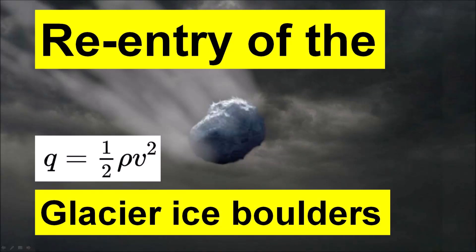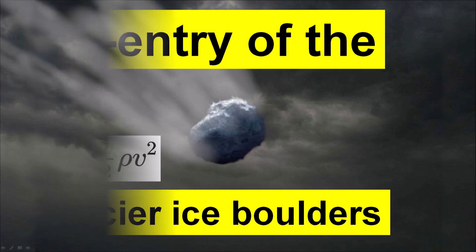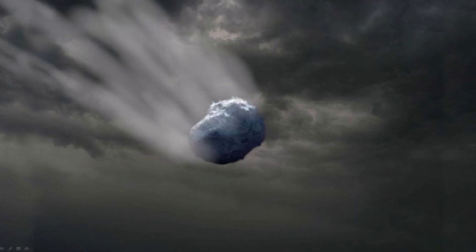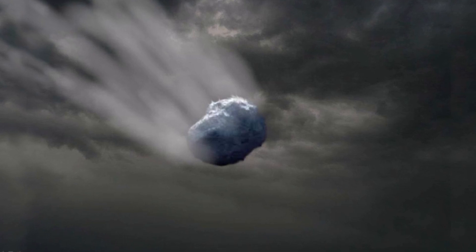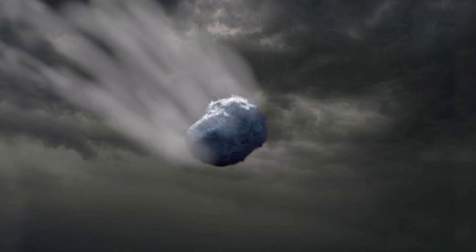Welcome to another presentation about the Carolina Bays and their origin. Today I will be discussing the atmospheric interactions of the ice boulders that made the Carolina Bays. The Glacier Ice Impact Hypothesis, published in 2017, proposes that the Carolina Bays were made by secondary impacts of ice boulders ejected by an extraterrestrial impact on the Laurentide Ice Sheet.